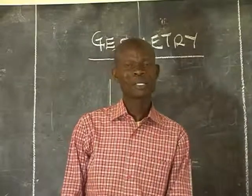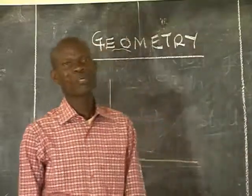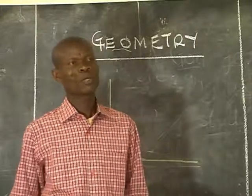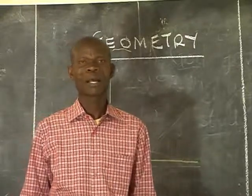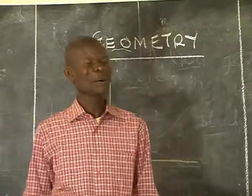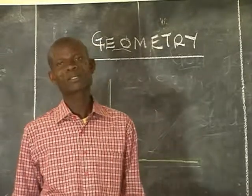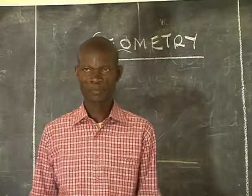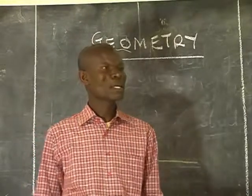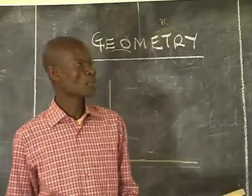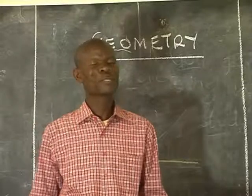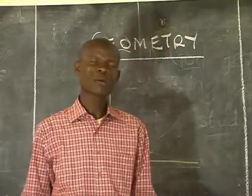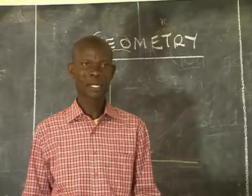Welcome to our third part of the geometry. As you can remember, in our last discussion we were talking about complementary angles, which we said are angles adding up to 90 degrees. Remember, complementary angles add up to 90 degrees, therefore it means that complementary angles are angles which are formed within a right angle.